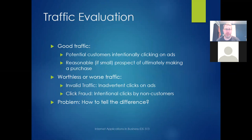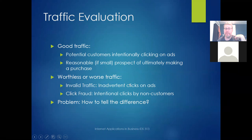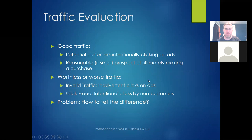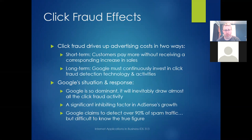Google has to evaluate traffic as good or bad. Good traffic is potential customers intentionally clicking on ads — not a guarantee they'll buy, but a reasonable non-zero probability. Worthless or worse traffic includes invalid clicks — people who accidentally click on ads and quickly bounce away. You sometimes see this when a page loads and jitters just as you hover over a link, causing you to click on an ad you didn't mean to. Then there's click fraud — intentional clicks by non-customers, like the unemployed blogger wanting $10 for pizza. Click fraud drives up advertising costs: in the short term advertisers pay more without increased sales; in the long term Google must invest in click fraud detection technology and monitoring, costs which ultimately get passed to advertisers as higher prices.